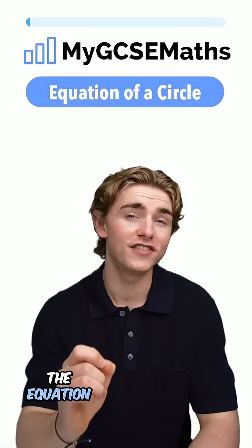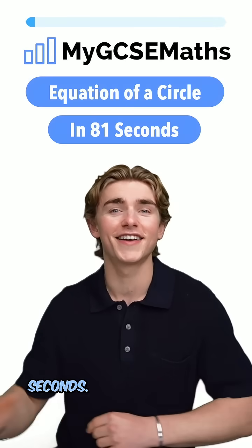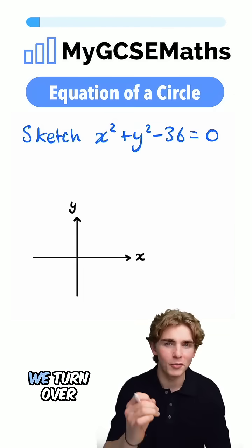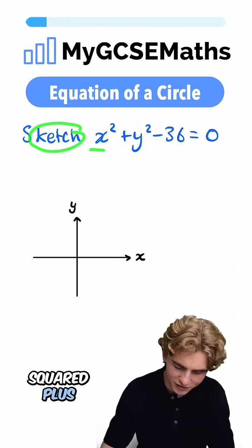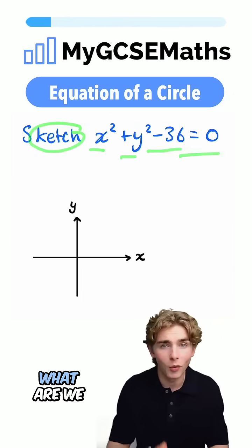GCSE Maths working with the equation of a circle in 81 seconds. Let's go. Let's say we're in our exam, we turn over the page and we see this question: sketch x² + y² - 36 = 0. What are we going to do?